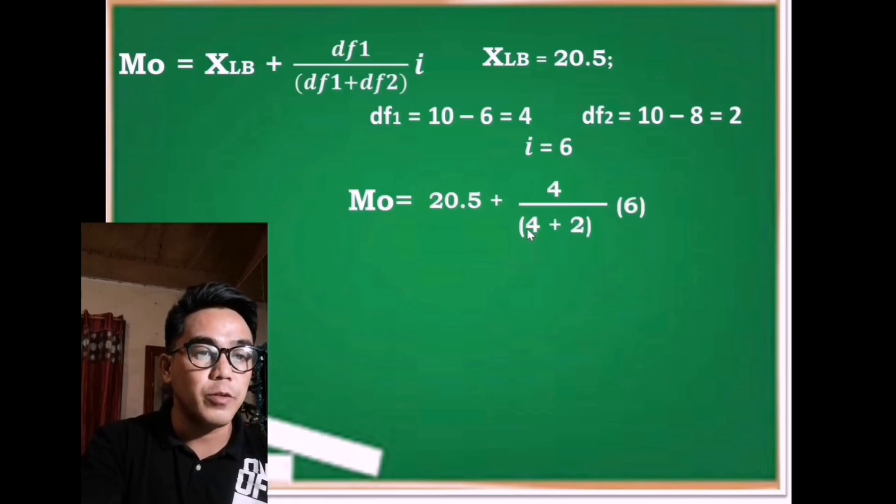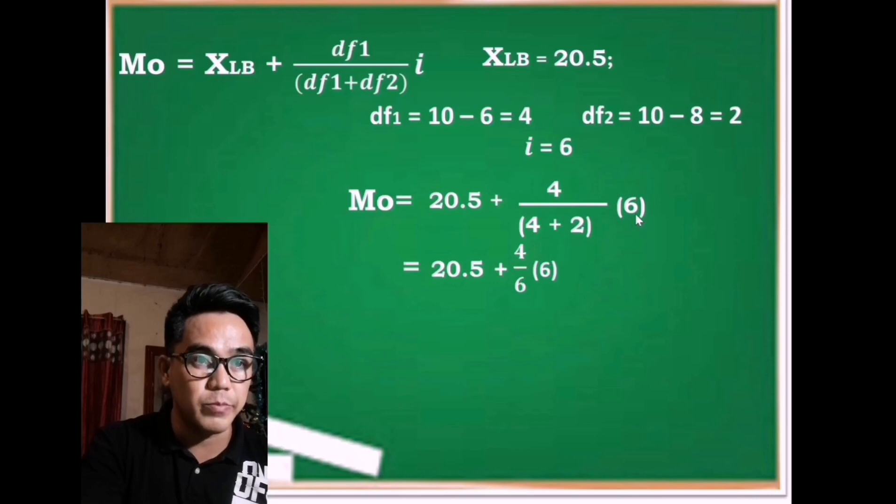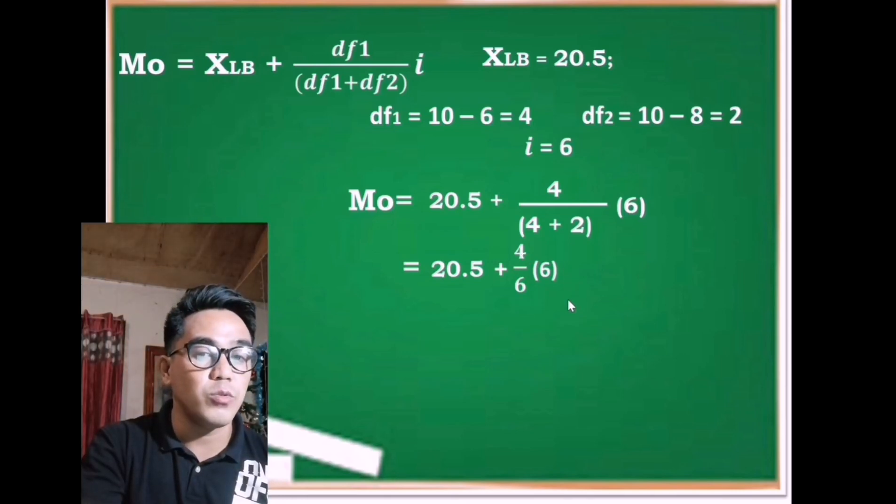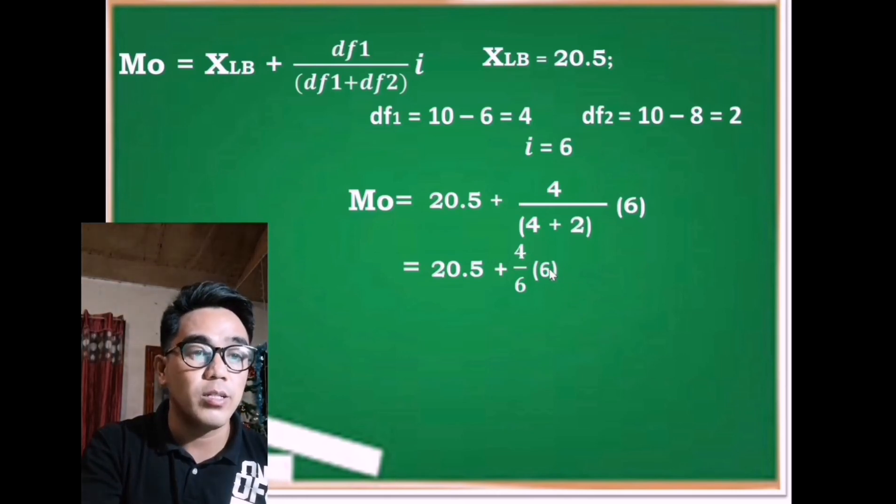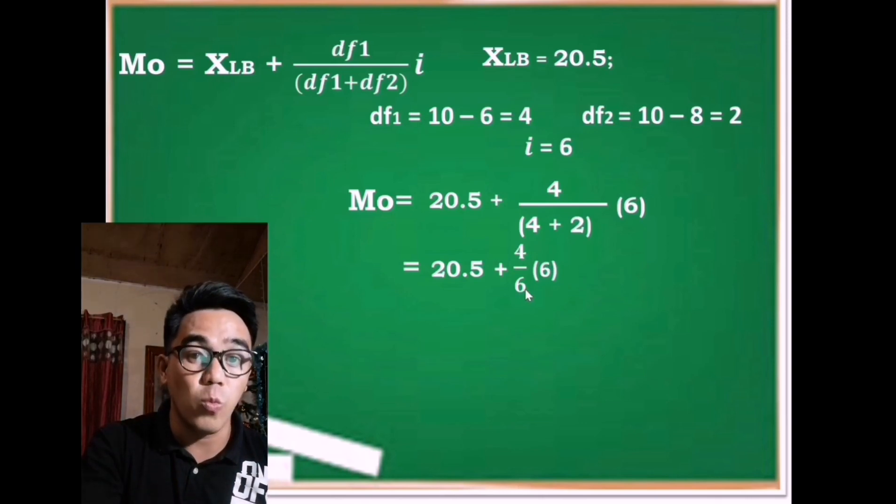After that, we're going to simplify. Since 4 plus 2 is 6, therefore equals 20.5 plus 4 plus 2 is 6 times 6. If we're going to simplify this number, we can make it as 4 times 6 over 6 or 4 divided 6 times 6. But I prefer to do it in this way that 6 divided 6 is 1, 4 divided 1 is 4. Therefore, we have 20.5 plus 4.